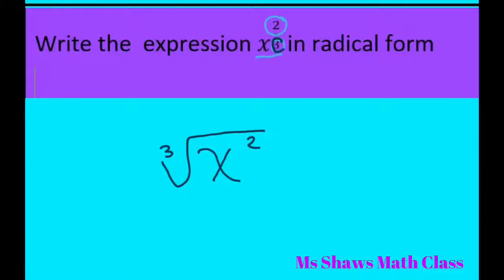If we had x to the 5 halves then that would be the square root of x to the fifth because 5 is your power and 2 is your root. Now if it is a 2 we usually don't put the 2 because that's the common one.